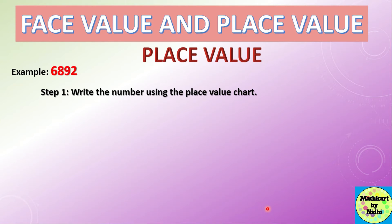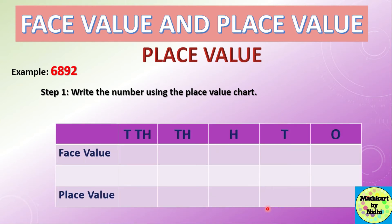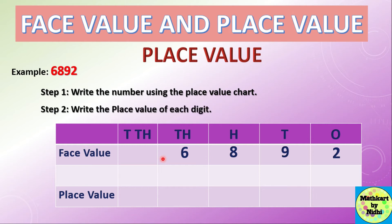We draw a place value chart with five place values: ones, tens, hundreds, thousands, and ten thousands. Writing down each digit: 2 is at the ones place, 9 is at the tens place, 8 is at the hundreds place, and 6 is at the thousands place. The second step is to write the place value of each digit by multiplying the face value with the value of the place. The face value of 2 is 2 and it is at units place, so 2 ones = 2.